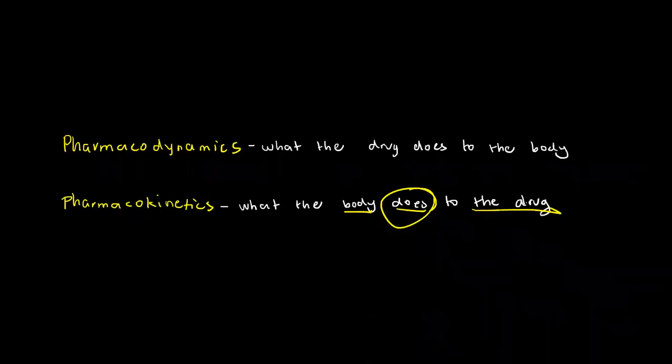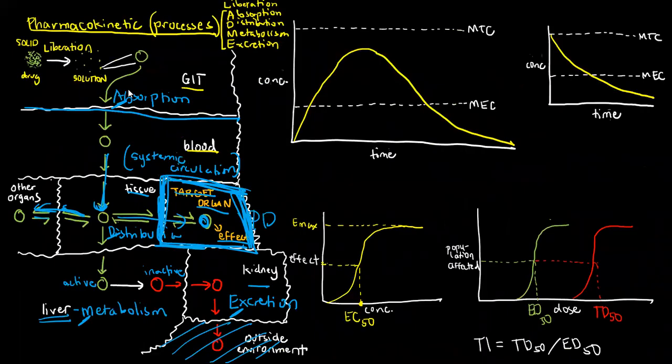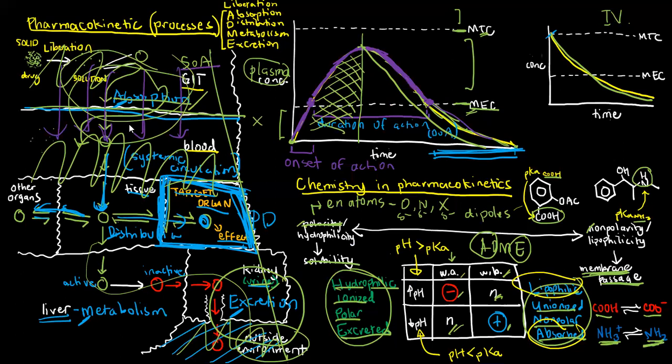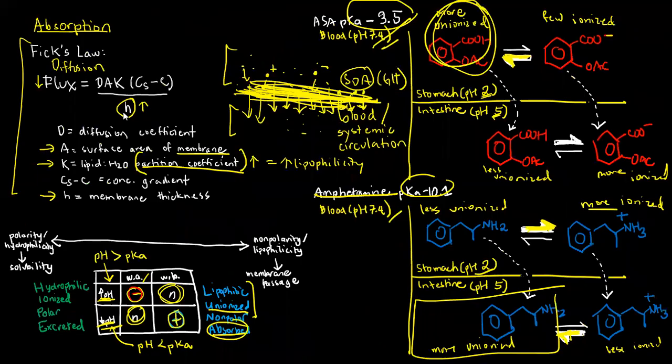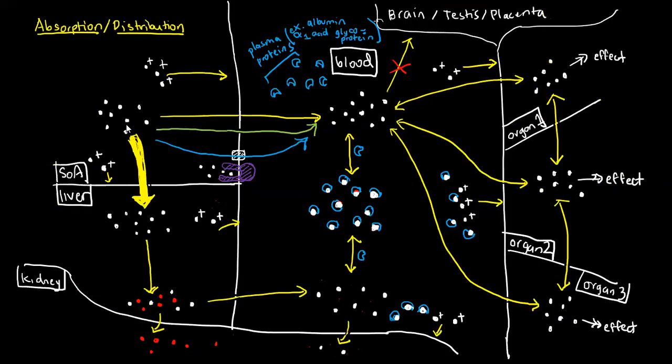In my overview of pharmacokinetics, I just showed that absorption is basically going from the site of administration, usually the GI tract, to our blood. So this is it for this overview. But of course, that is not the only thing that we should imagine if we are to know more about the absorption process for drug molecules.